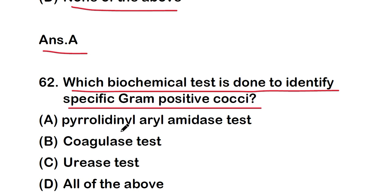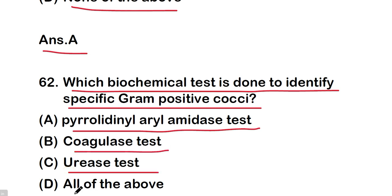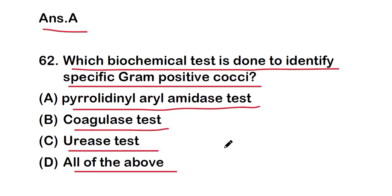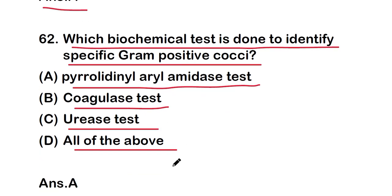Next question: which biochemical test is done to identify specific gram-positive cocci? The options are pyrrolidonyl arylamidase test, coagulase test, urease test, or all of the above. The right answer is option A — the pyrrolidonyl arylamidase test, which is performed to identify specific gram-positive cocci.